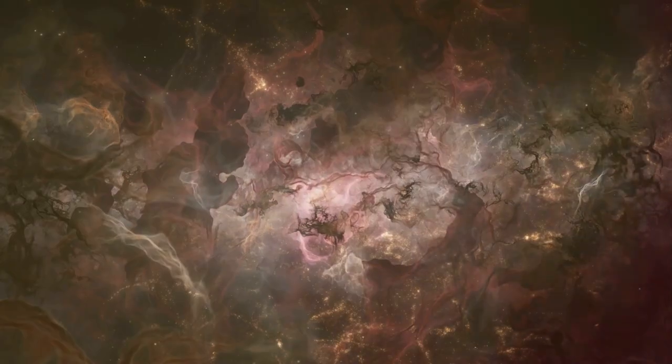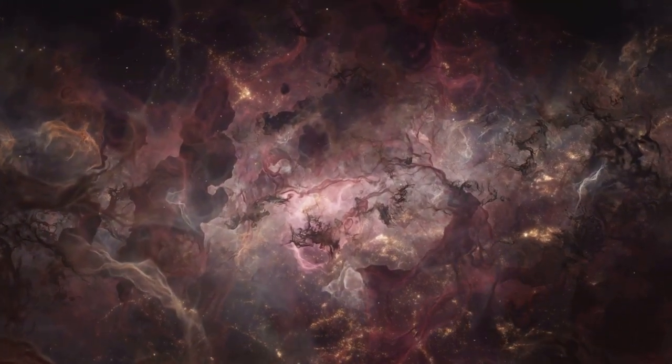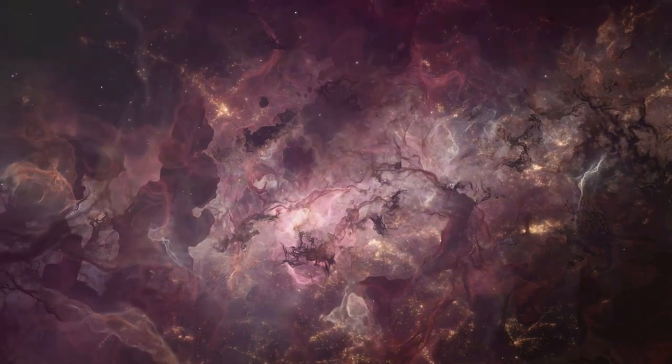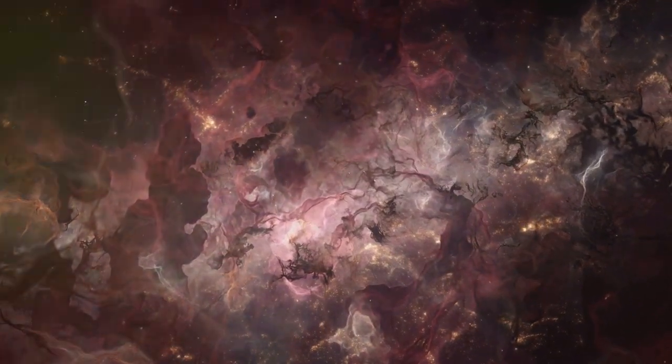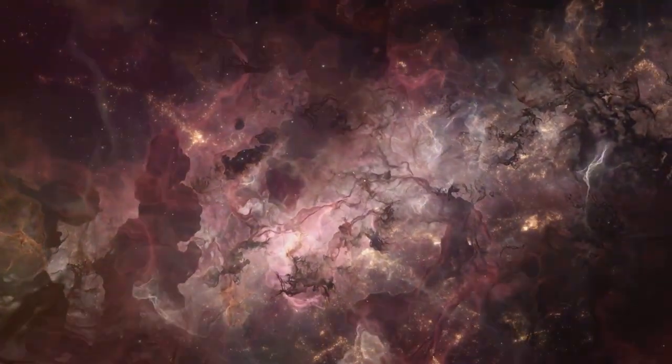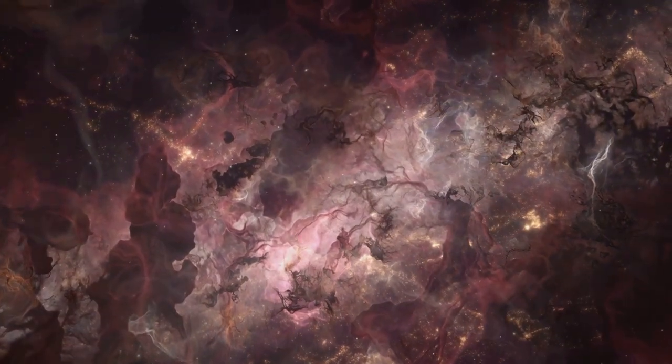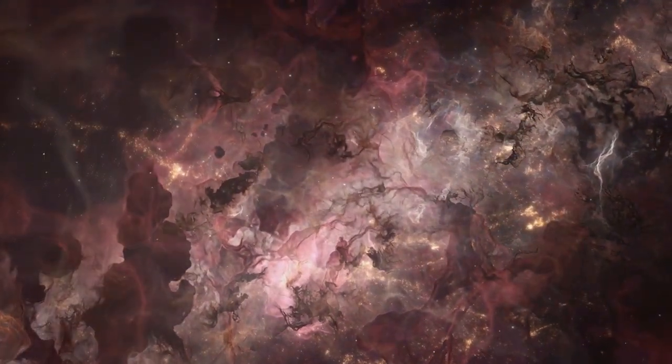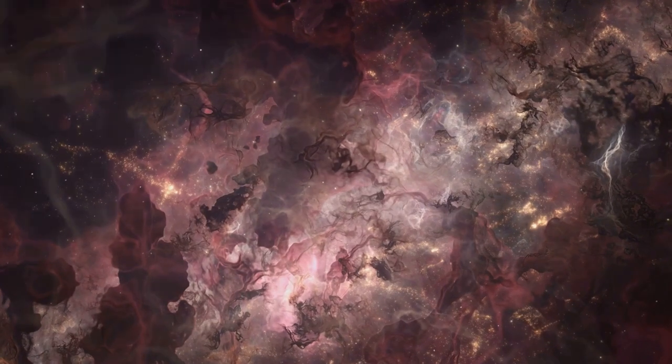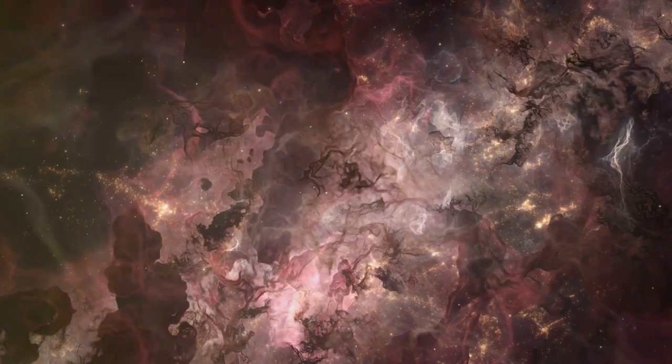Imagine a sculptor shaping clay into a masterpiece. The sculptor is unseen, but the effects of his work are obvious in the form the clay takes. That's a bit like how dark matter works. We can't see it, but we can see its influence. It's the unseen force shaping the galaxies, keeping them together and influencing their movements. But what is it exactly?